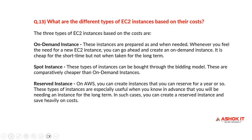Spot instances can be bought through a bidding model and are comparatively cheaper than on-demand instances. Reserved instances are those which you can reserve for a year or more. These are especially useful when you know in advance that you will need the instance for the long term. In such cases, you can create a reserved instance and save heavily on cost.